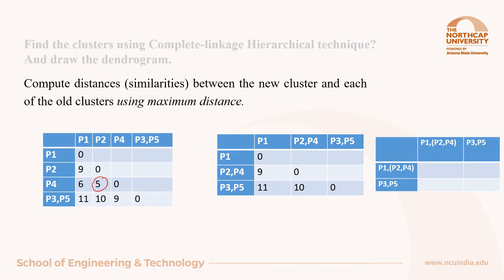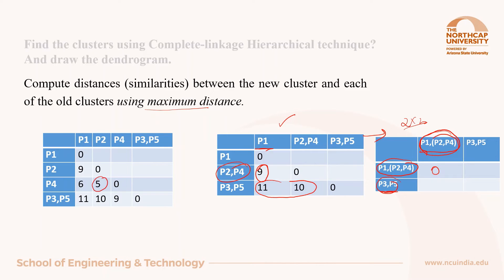Now again look for the shortest distance in this matrix, which is 9, and it is between P1 and P2P4. So I will merge these two — P1 and P2P4 — together, and the new matrix will be of size 2 by 2. Let us compute the distances using maximum distance or complete linkage. Distance here will be 0. The distance of cluster P3P5 from this new formulated cluster will be maximum of 11 or 10, so 11 will come here, and the other diagonal is 0.